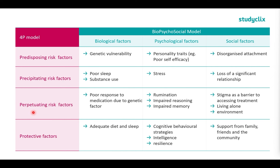Moving on to our perpetuating risk factors — what keeps the disorder continuing — we have poor response to medication due to genetic factors, meaning the medication isn't helping us get better. We're continuing to overthink; we have impaired reasoning and memory skills impacting our mental health and preventing recovery. Our social perpetuating factors are stigma, which can be a barrier to accessing treatment; living alone and lacking support; and environmental factors such as living standards — for instance, if someone is homeless, this may perpetuate their mental health disorder.